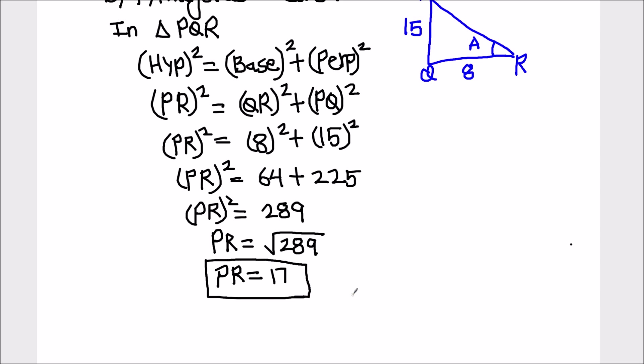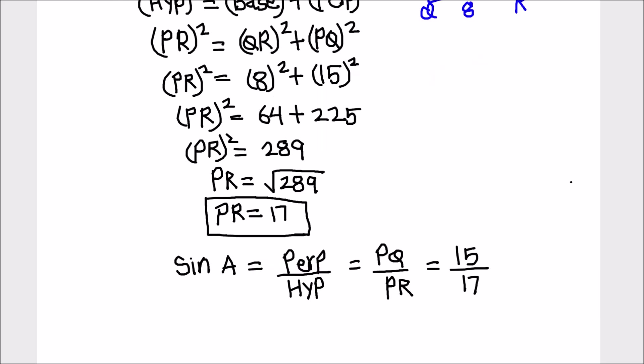We got the value of hypotenuse as 17. Now we can find the value of sin A. Sin A equals perpendicular upon hypotenuse, which is PQ upon PR. That's 15 upon 17.